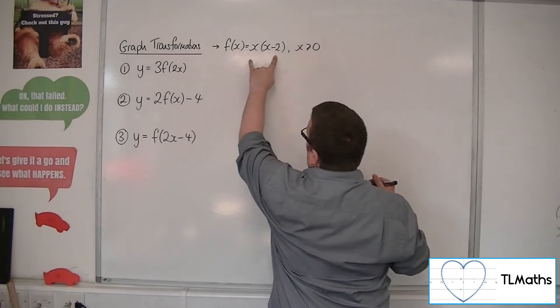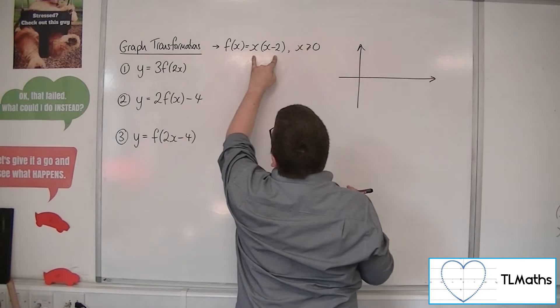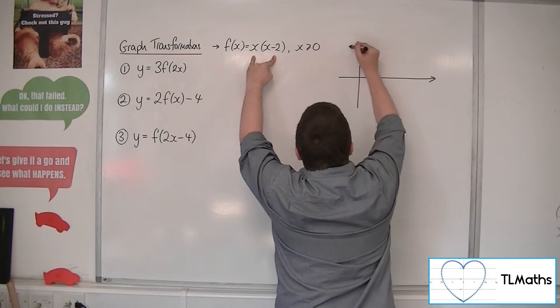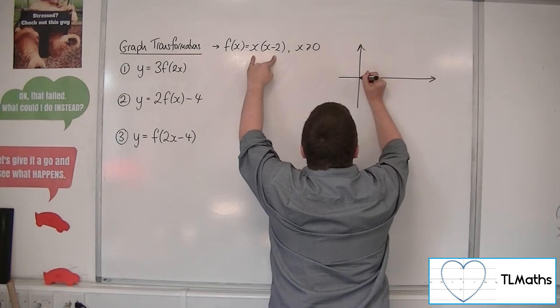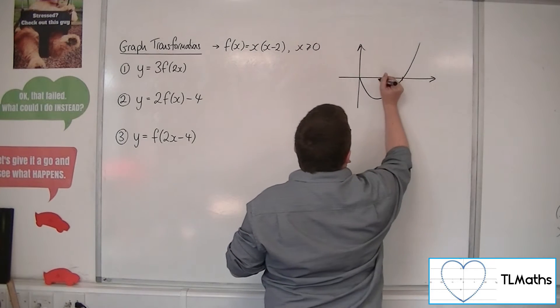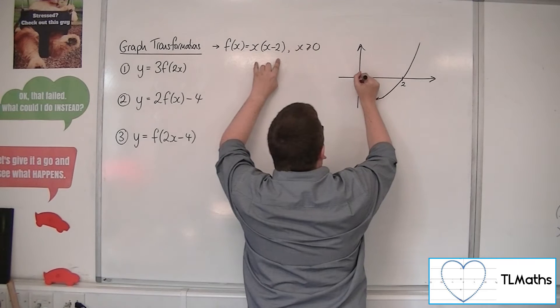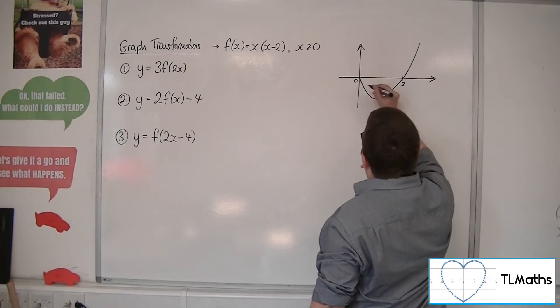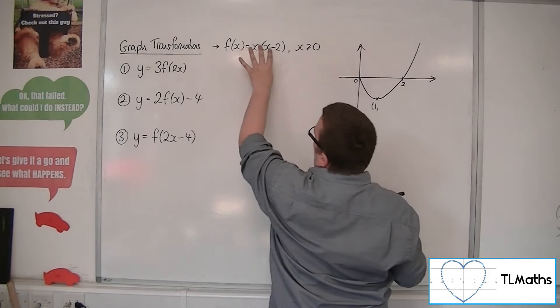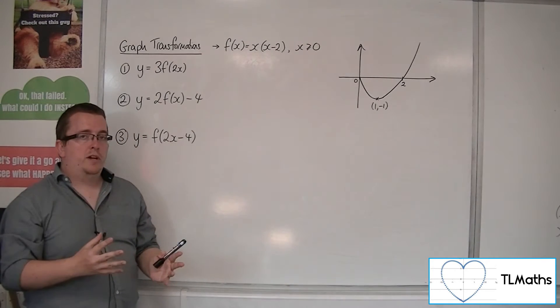So first thing we want to do is know what the original curve looks like before we transform it. This will describe a parabola, x times x minus 2, a positive parabola. The curve would normally come down through here but it will get cut off at this point since x is greater than or equal to 0. This is my parabola crossing through the x-axis at 2, and at that point 0 there. It has this vertex which will be at 1 comma negative 1, because it's halfway between 0 and 2 and the y-coordinate will be 1 times minus 1.